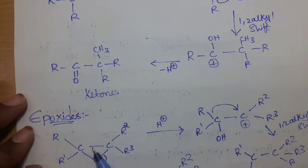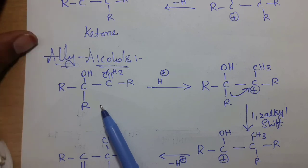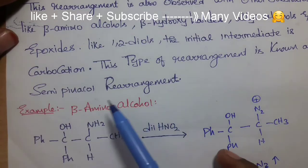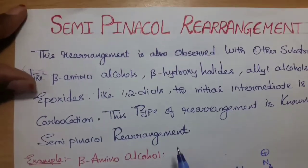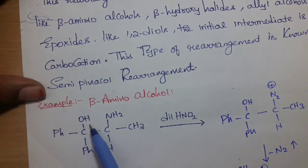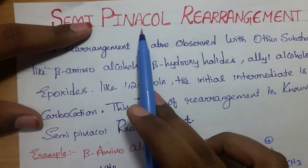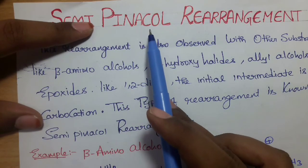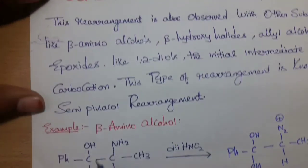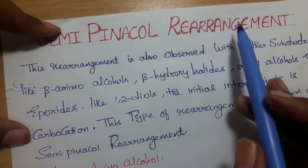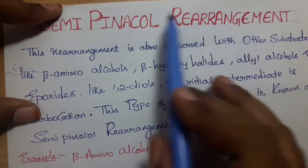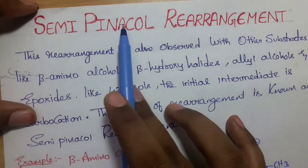In total, epoxides, allyl alcohols, beta hydroxy halides, and beta amino alcohols all undergo semi-pinacol rearrangement. Semi-pinacol rearrangement means only one OH group is present. Pinacol-pinacolone rearrangement involves two OH groups — a 1,2-diol. With only one OH group present, we get the ketone reaction. This is semi-pinacol rearrangement.